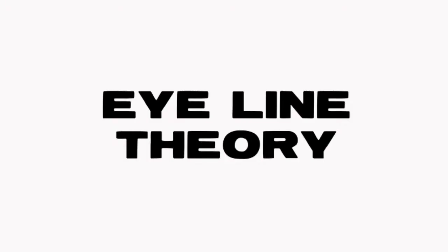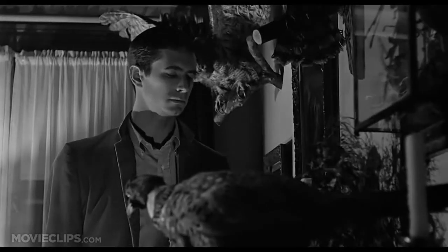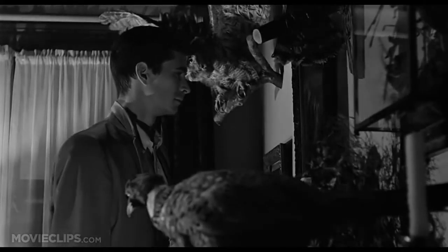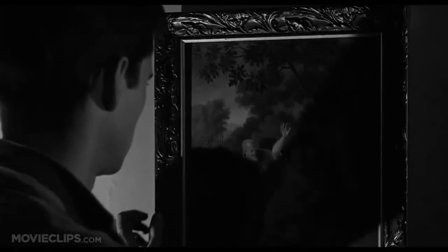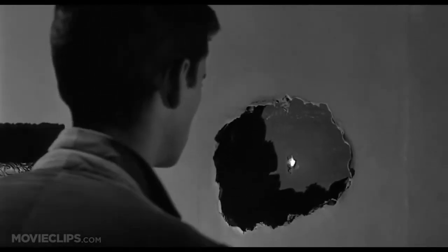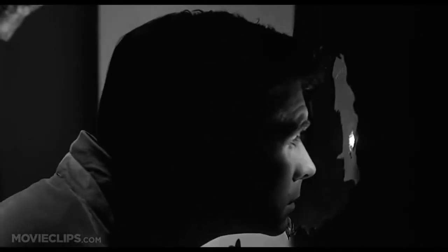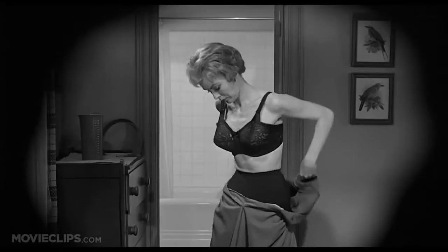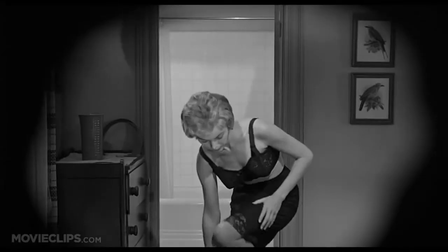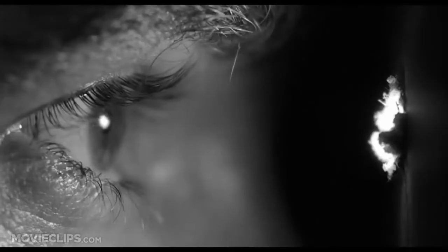The eyeline theory is another example of Hollywood editing that uses the premise that the audience would want to see what the character on screen is seeing. The character would often be looking at something off screen in the first shot, followed by a second shot of what the character was looking at. This technique is used in the Hitchcock film Psycho when Bates is shown looking through a hole in the wall, and the next shot shows what he was looking at.